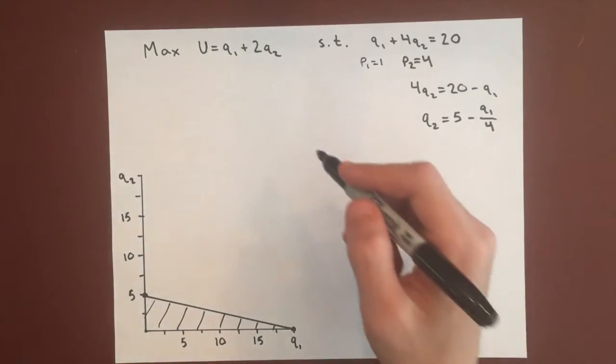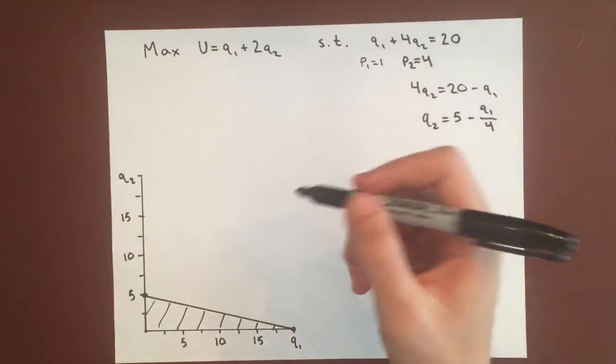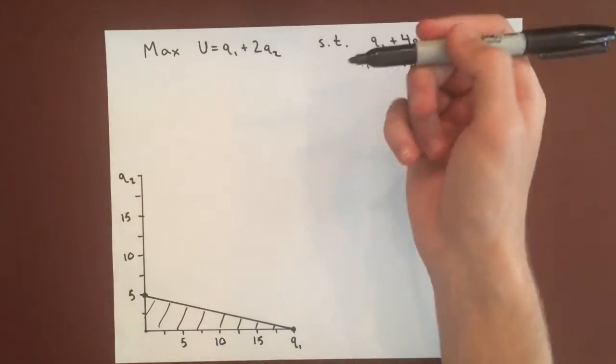We have to find the indifference curve which is farthest away from the origin, or in other words which gives us the maximum utility.